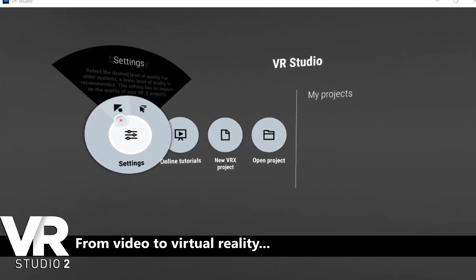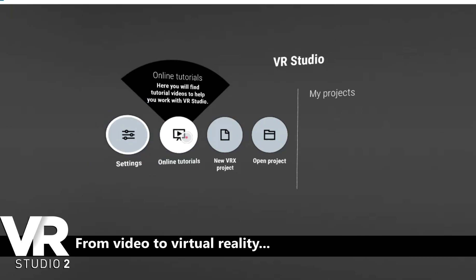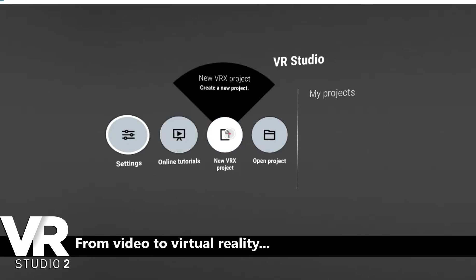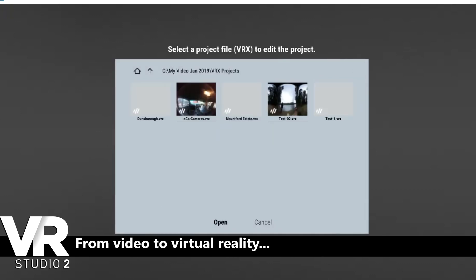When you first start VR Studio, you are presented with a screen offering a number of different choices. Settings allows you to change the level of quality, as some older systems may not cope with high resolution when creating a VR scene — this will not affect final output. Here you can also select a control method, such as a mouse or a headset. Online Tutorials is a link to some basic overview tutorials, and New VRX Project is where you start a new project. Finally, Open Project lets you continue working on an existing project, and any existing projects will also be displayed with the project name and the date last opened.